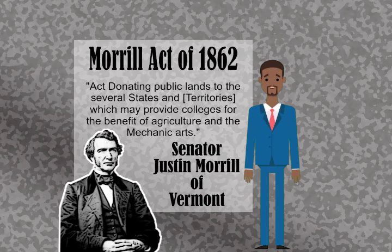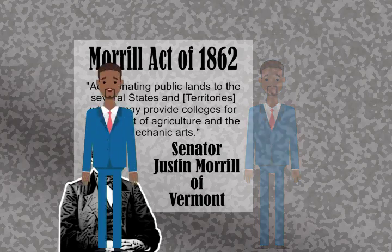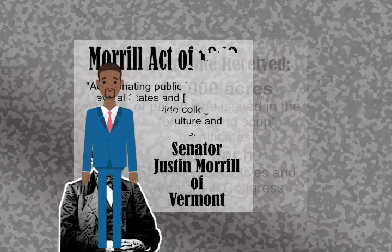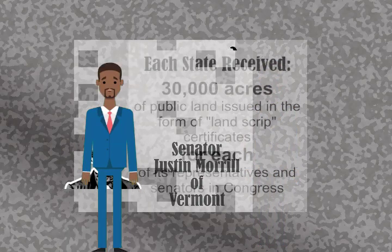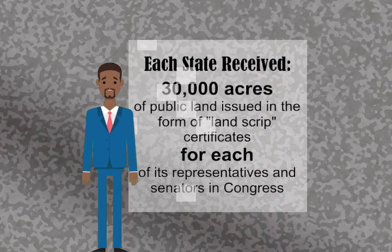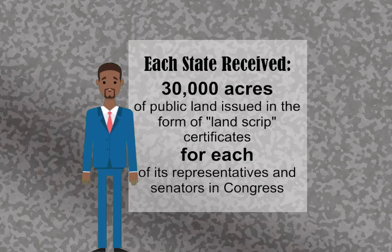The Morrill Act committed the federal government to grant each state 30,000 acres of public land, issued in the form of land script certificates for each of its representatives and senators in Congress.